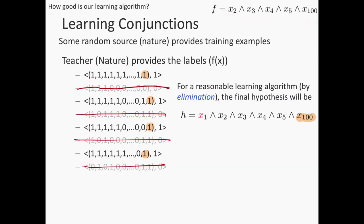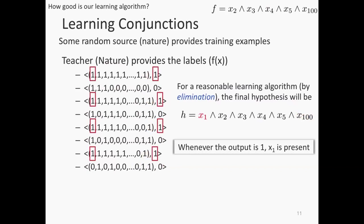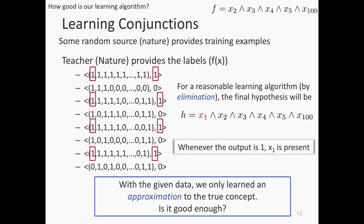The algorithm has found a classifier that is perfectly in agreement with the data, but it's not the same function as the one used by nature. The reason x1 shows up is that whenever the output is 1, x1 is present in this particular sample. Maybe with a different sample x1 would not be correlated with label 1. So we've not learned the true function but an approximation — and the question is: is that okay?